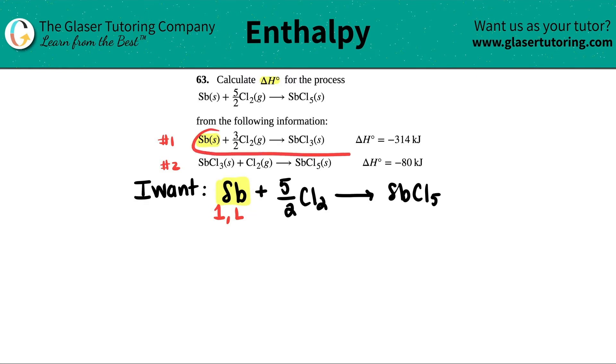So I'm going to take this information, but now it has to match. I want one Sb and I want it on the left side. What's going on in this equation? How many Sb's do I have? I got one. And is it on the left side? Yeah, it's on the reactant side. So it matches.